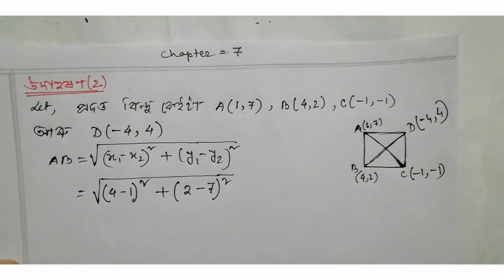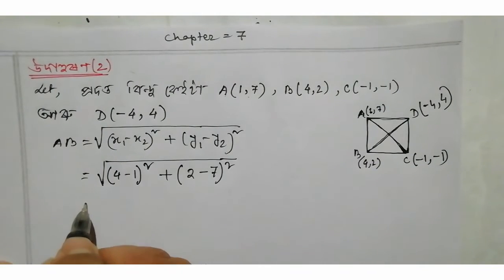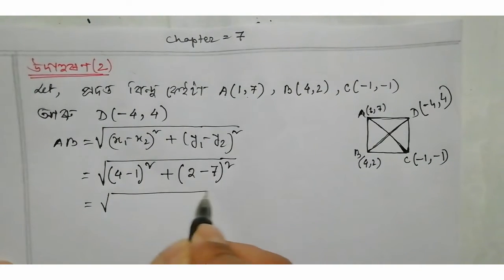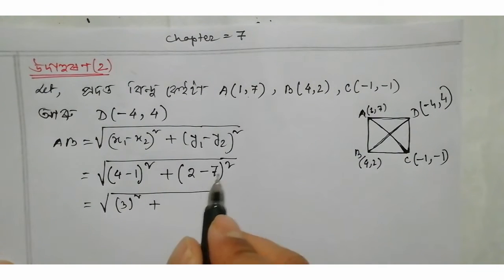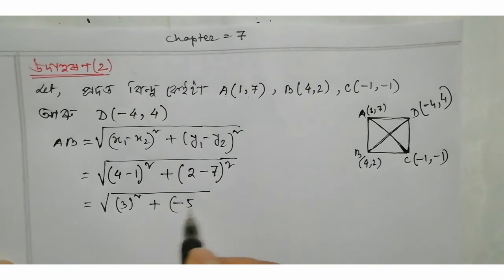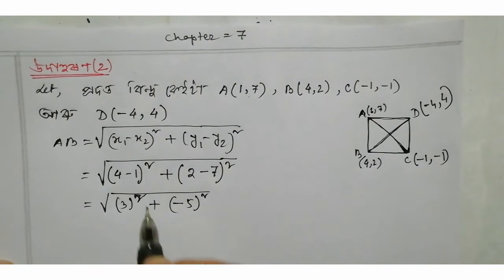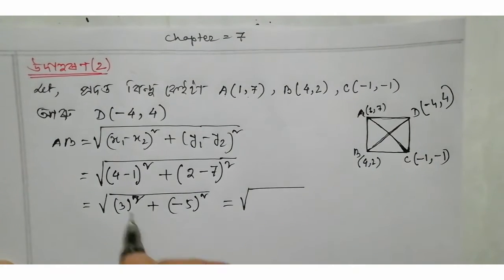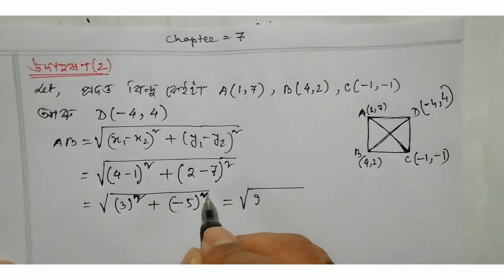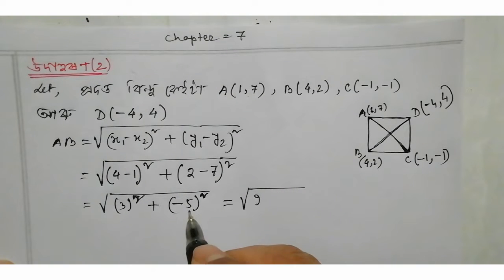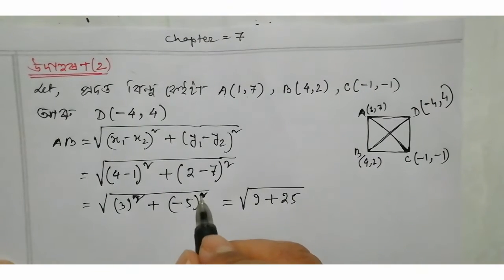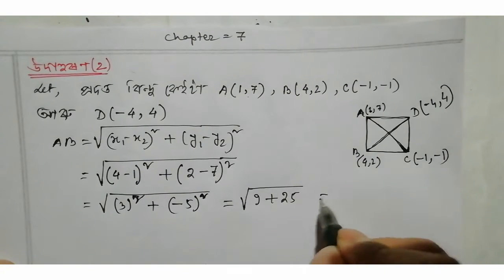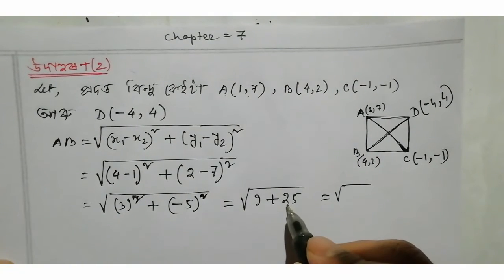4 minus 1 is 3. Then 3 squared plus 2x — 7 is 7 minus 2 is minus 5. Square is equal to this: 3 squared is 9, and minus 5 squared is 25, plus 25. The power is an even number so minus becomes plus. So this is the root of r, which equals root 34.